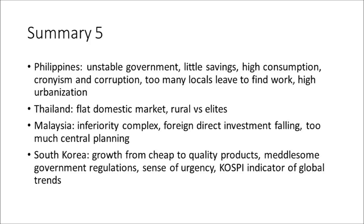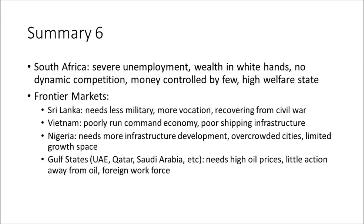Sharma is high on South Korea, though he warns of a transition from cheap to quality products and meddlesome government regulations. However, there is a sense of urgency, and the KOSPI has become an indicator of global trends. In South Africa, he finds severe unemployment, wealth concentrated in white hands, no dynamic competition, and money controlled by a few in a high welfare state.